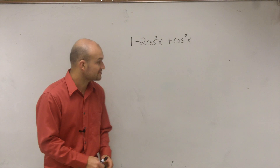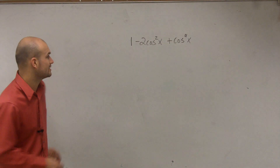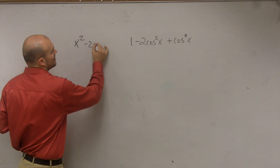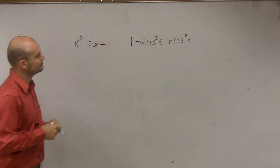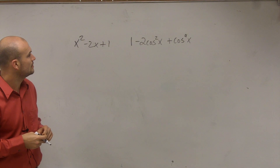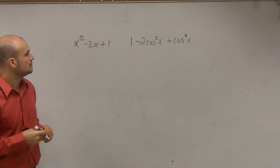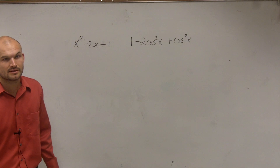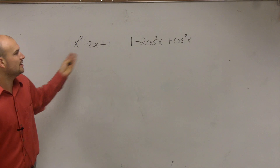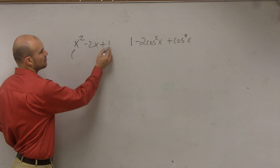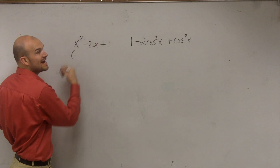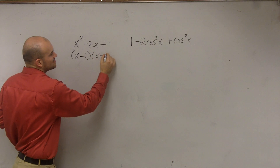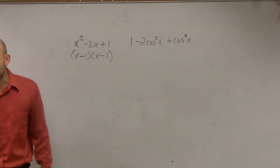When I think of factoring, I think of something like this: x squared minus 2x plus 1. What two numbers multiply to give you positive 1 but add to give you negative 2? You could say that's going to be x minus 1 times x minus 1. To me, that makes sense as factoring.